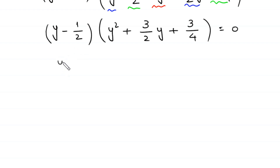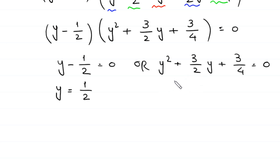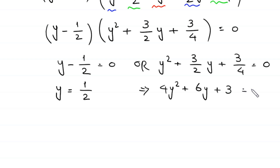From here, either y minus 1 over 2 is equal to 0, or y squared plus 3 over 2 times y plus 3 over 4 is equal to 0. From the first equation we get y equals 1 over 2. To find other values of y we solve this quadratic equation. First, to remove fractions, we multiply both sides by 4, giving: 4y squared plus 6y plus 3 equals 0.